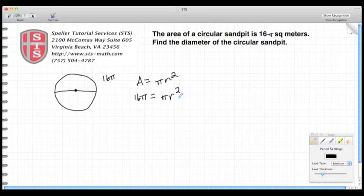Now we want to try to find the diameter. To do that, we first need to find the radius. So to find the radius, we need to isolate r². We divide both sides by pi. Pi divided by pi simplifies down to just r², and pi divided by pi simplifies to 1, leaving us with 16.